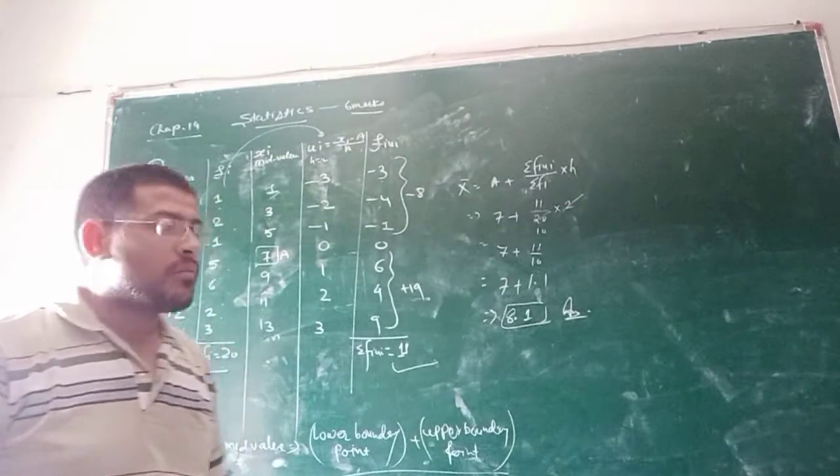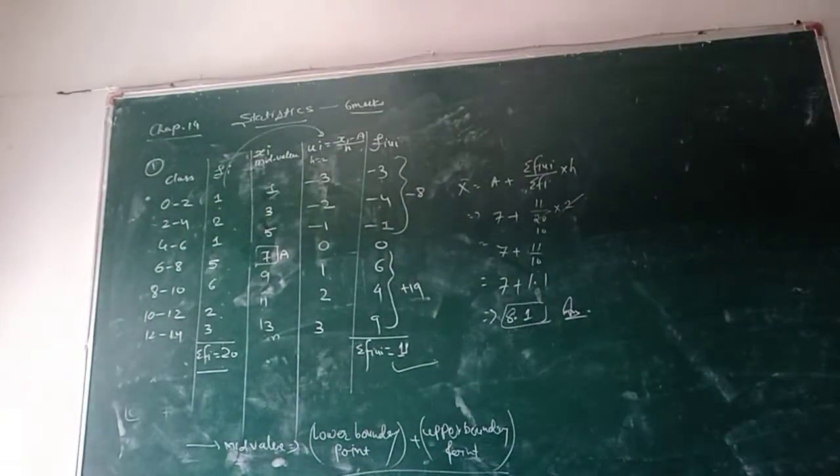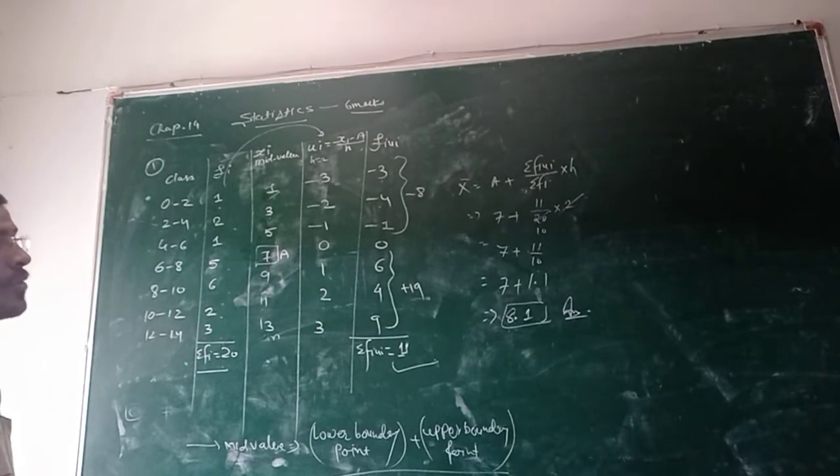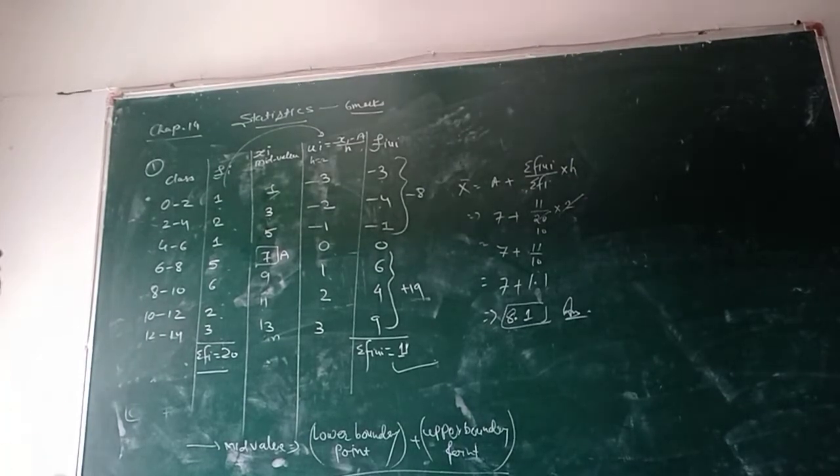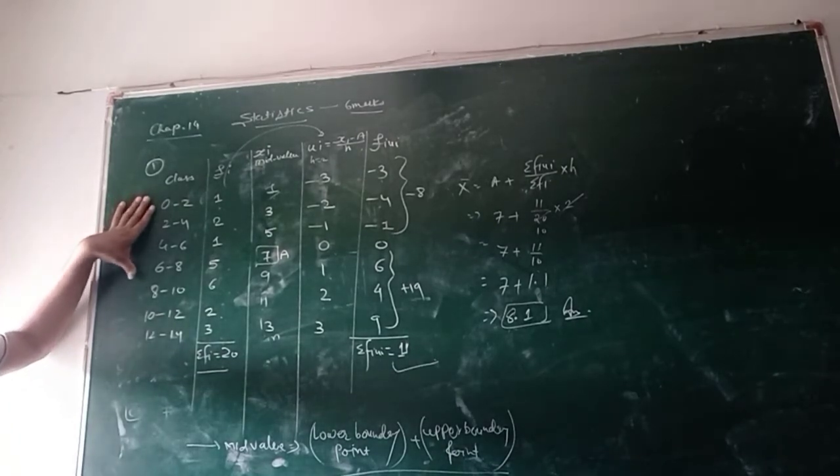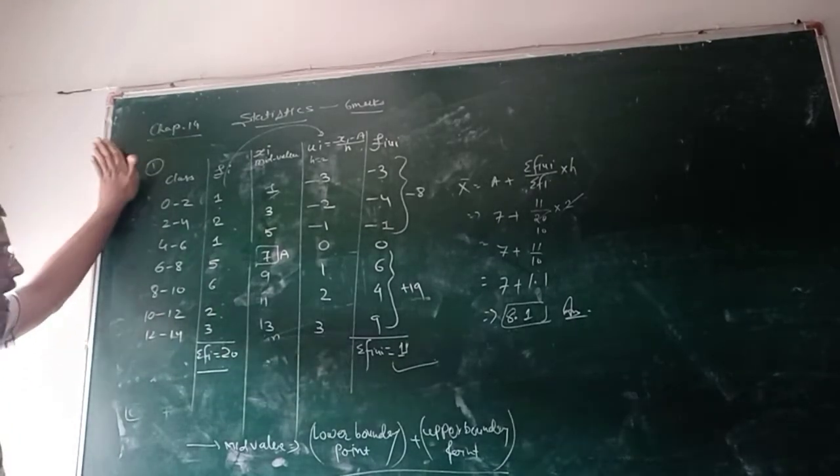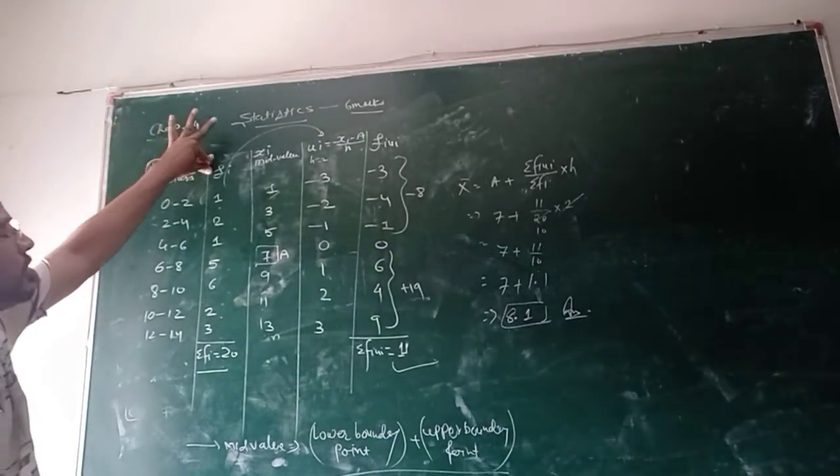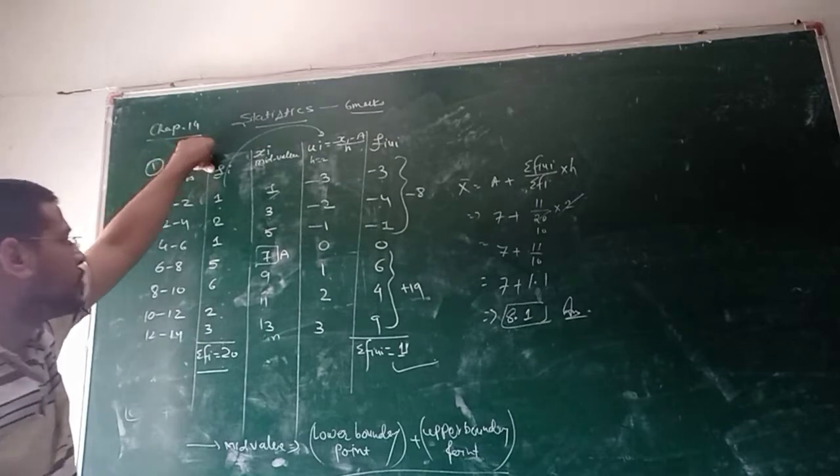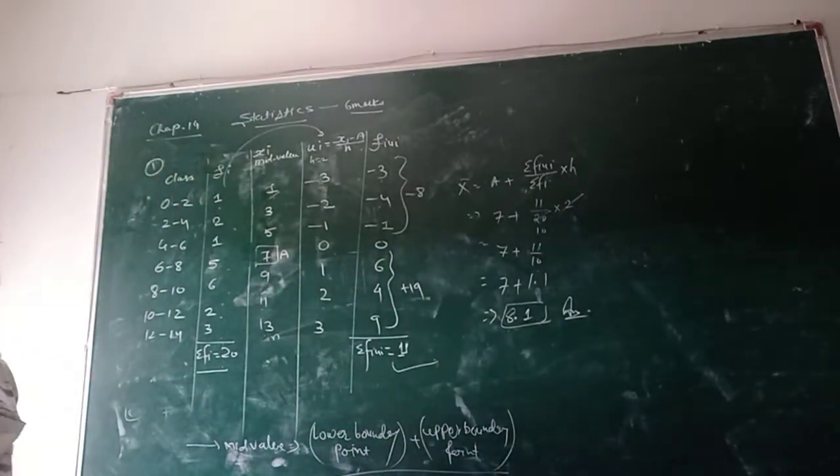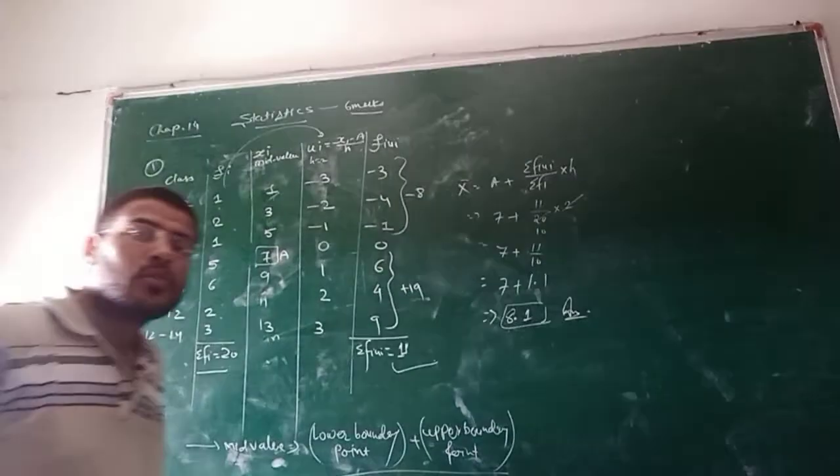Today, we are taking the very first question of exercise 14.1 to find out mean. You have given a class 0-2, 2 to 4, 4 to 6, 6 to 8, 8 to 10 and so on. Frequencies also given to you of 20, plus 1, 1, 5, 6, 2, 3. And what they have demanded, they have just demanded to calculate mean.